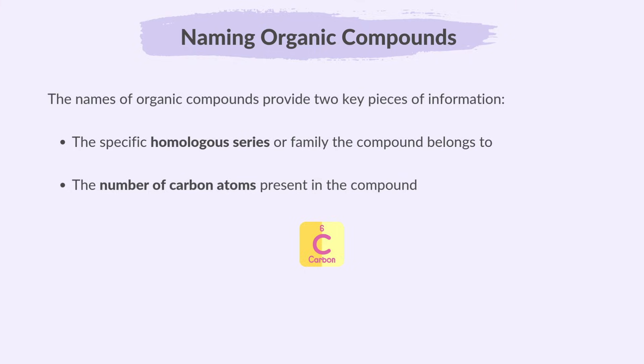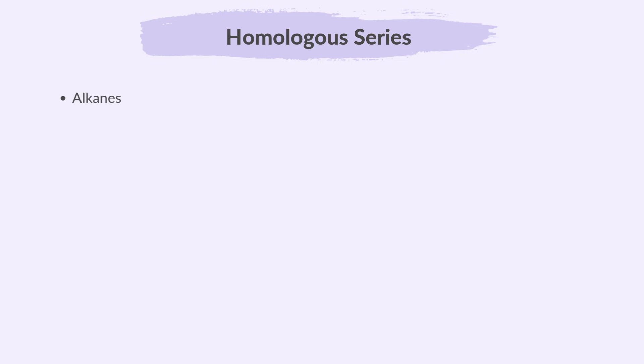We introduced the homologous series in the previous video. We have alkanes, alkenes, alcohols, and carboxylic acids.